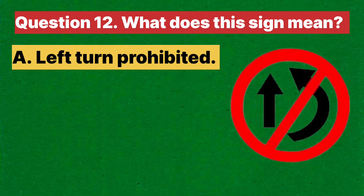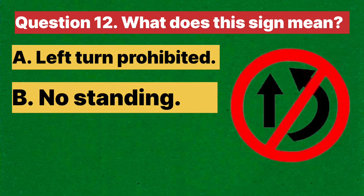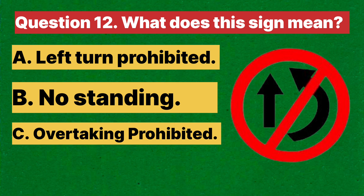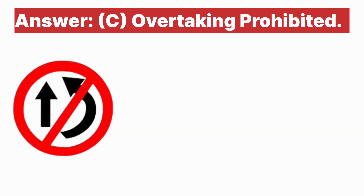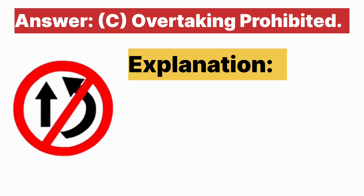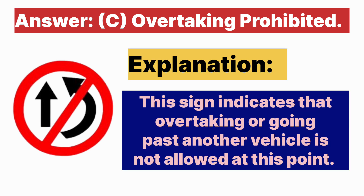Question twelve: What does this sign mean? A. Left turn prohibited. B. No standing. C. Overtaking prohibited. D. None of the above. Answer is C, overtaking prohibited. Explanation: this sign indicates that overtaking or going past another vehicle is not allowed at this point.